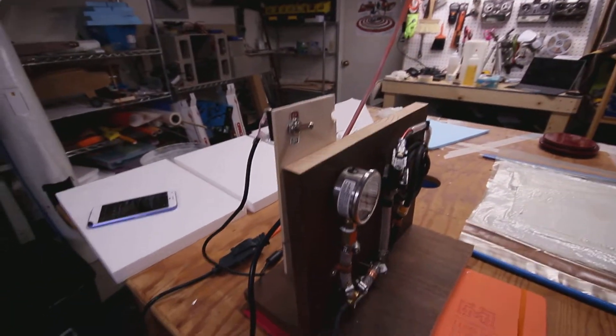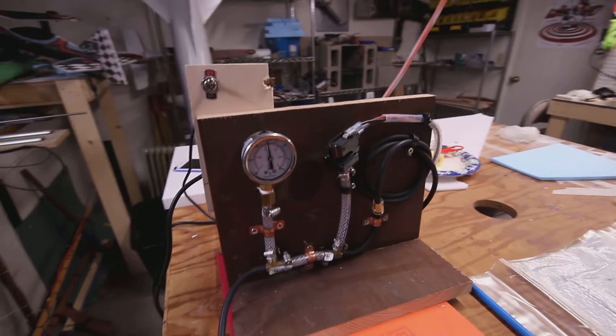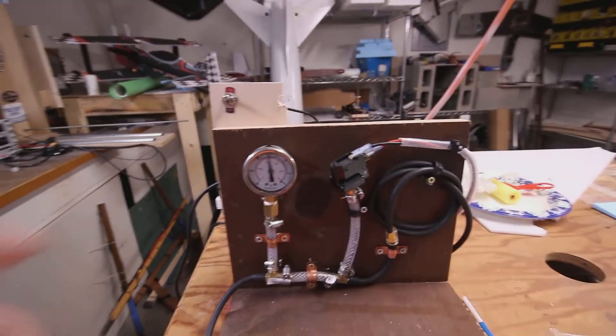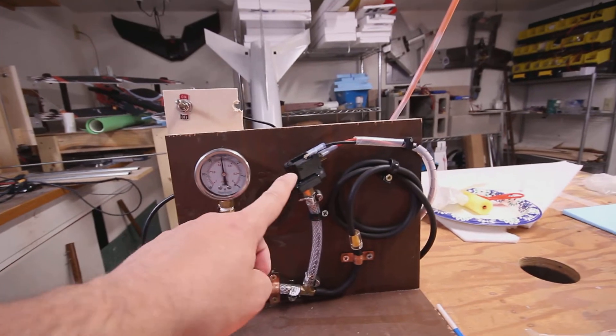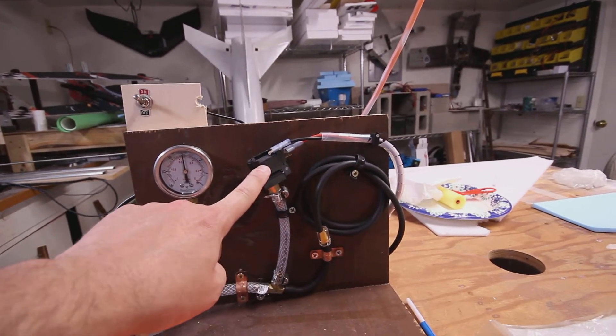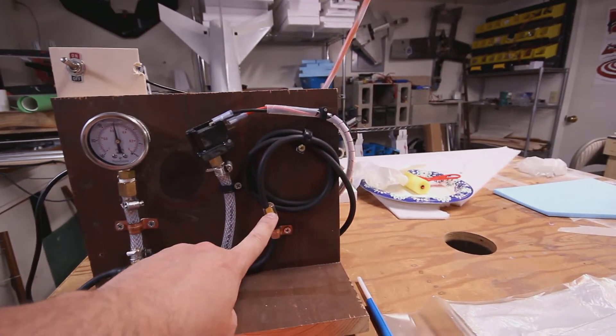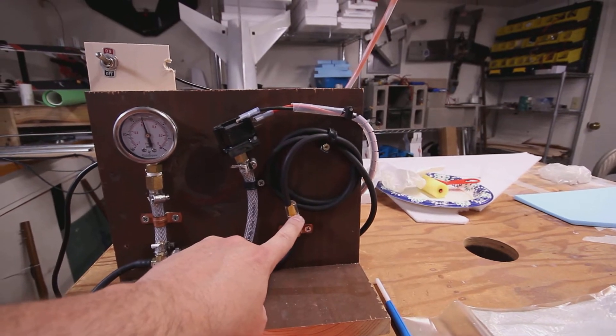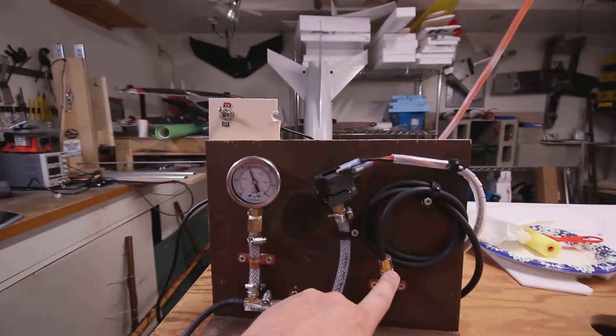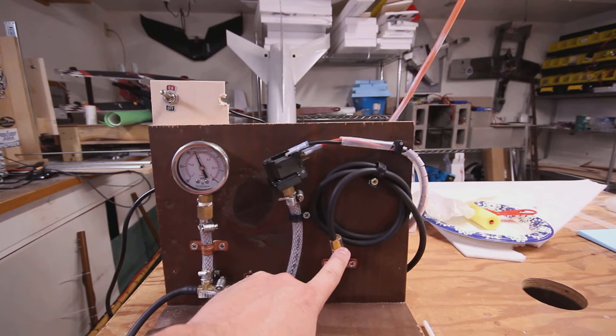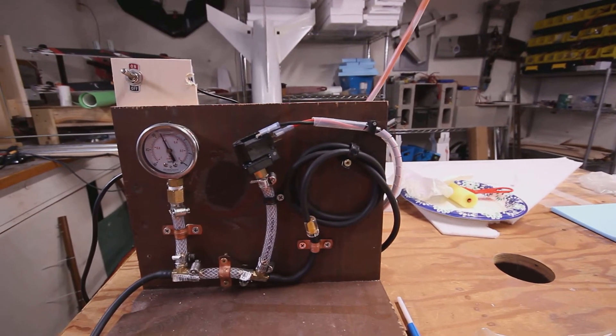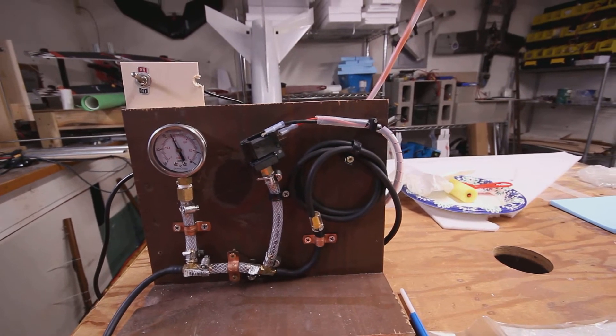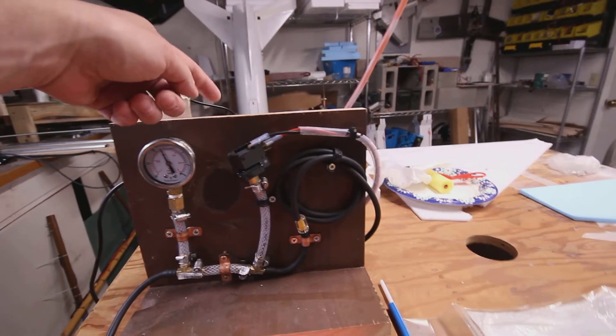It has an on-off switch, pressure gauge, pressure switch, and one-way valve. This one-way valve doesn't let the pressure leave the system back to the pump. It's also good for the pump because it lets pressure be relieved.